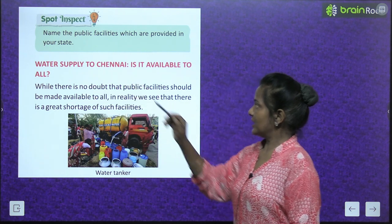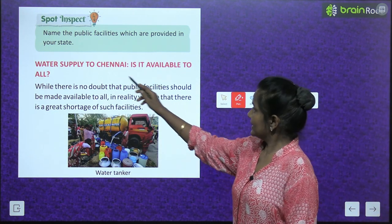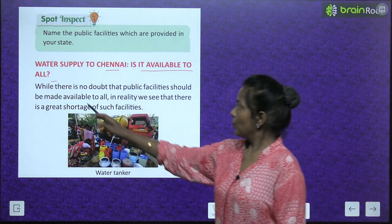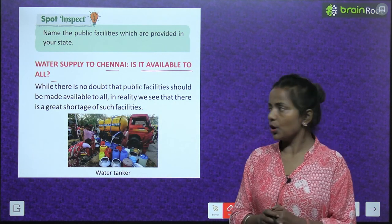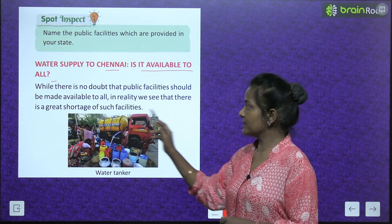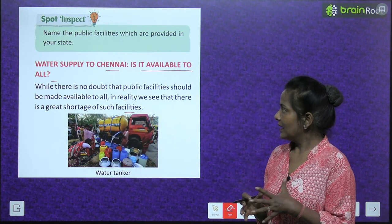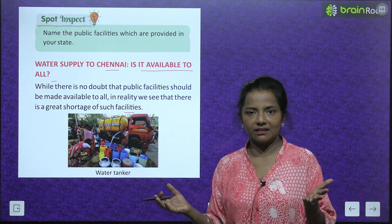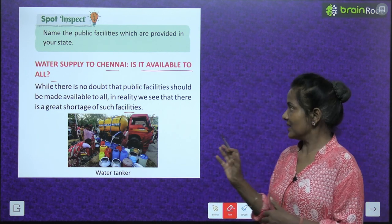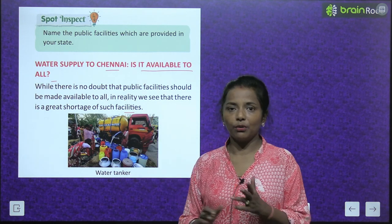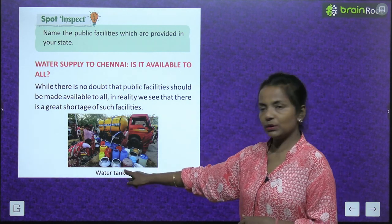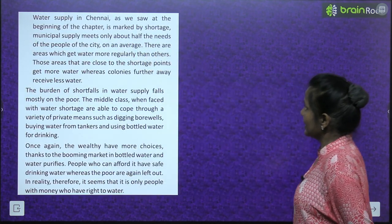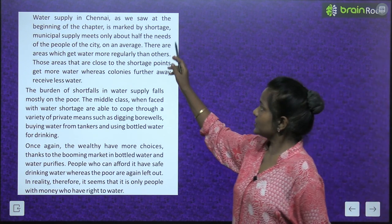Now, water supply to Chennai — Chennai ko water supply. Is it available to all? Kya ye water supply Chennai mein sabhi ko available karwaya gaya hai? While there is no doubt that public facilities should be made available to all, in reality we see that there is a great shortage of such facilities. Public facilities ki bahut shortage hai. This is a water tanker giving water and people are filling their buckets and pots. Water supply in Chennai, as we saw at the beginning of the chapter, is marked by shortage.